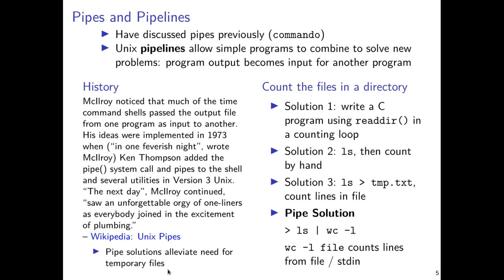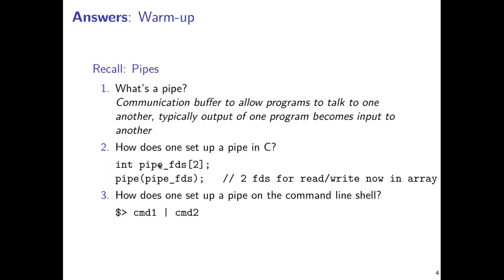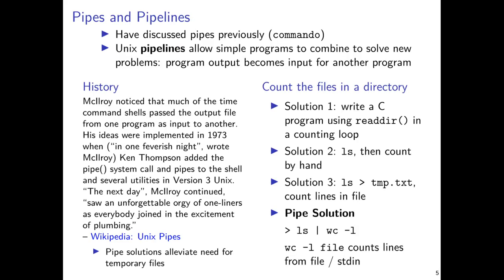The history of pipes and pipelines is somewhat interesting. The notion of a pipeline is just programs strung together where the outputs of an earlier program become the inputs of a later one. This was a result of early development in Unix, where McIlroy noticed he wrote a lot of programs that would direct output into temporary files, then another program would use that as input.